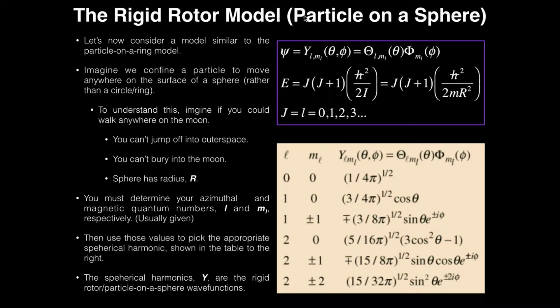Now one thing, the rigid rotor model is also called particle on a sphere. So this actually has a similar context to particle on a ring except now the particle is confined to anywhere on a sphere.